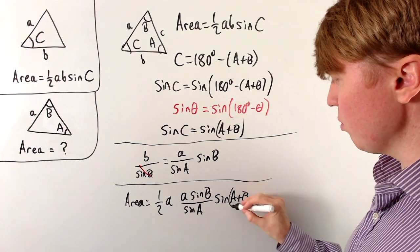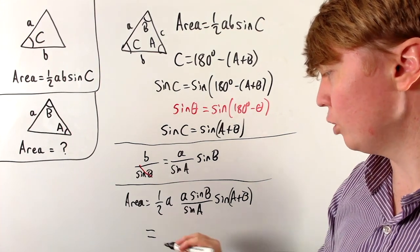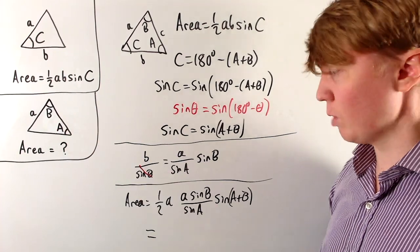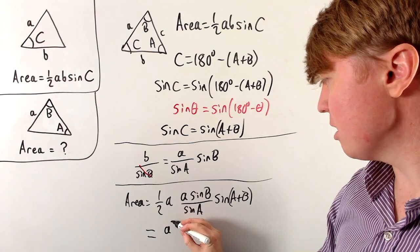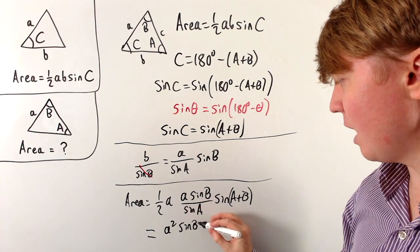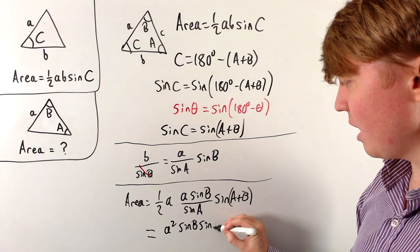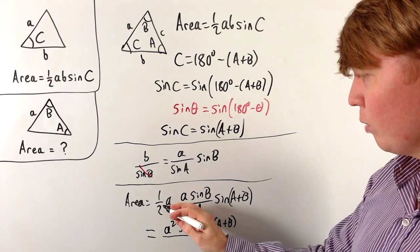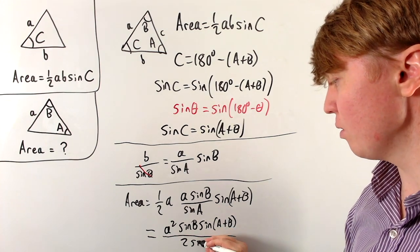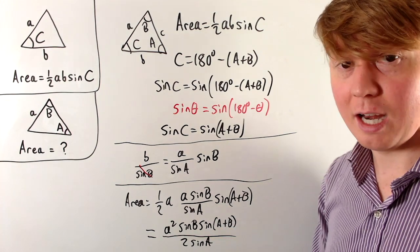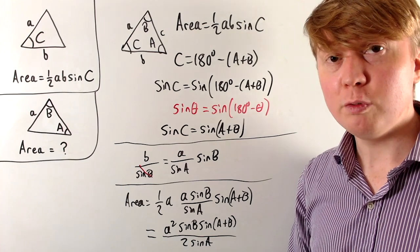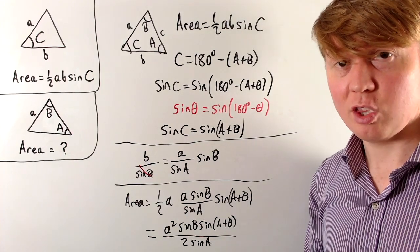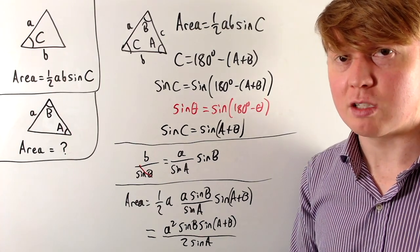Putting this into a single fraction gives us our new formula for the area of a triangle when we have two angles and one non-enclosed side. We get a squared from the two a's, multiplied by sine B multiplied by sine(A plus B), all divided by 2 sine A. So if we know capital A, capital B, and side length a, we can find the area immediately.